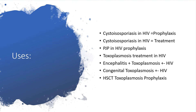In Pneumocystis jirovecii pneumonia, formerly known as Pneumocystis carinii pneumonia, in HIV, you can use pyrimethamine for prophylaxis. Toxoplasmosis treatment in HIV — you can use it. Encephalitis with toxoplasmosis with or without HIV — you can use it. In congenital toxoplasmosis with or without HIV — you can use it.